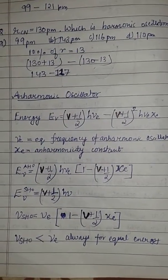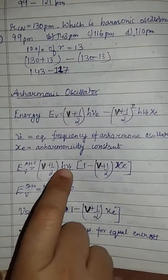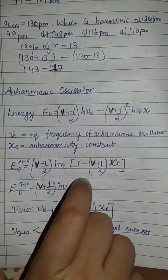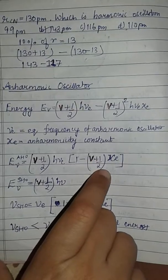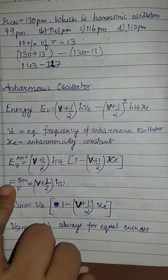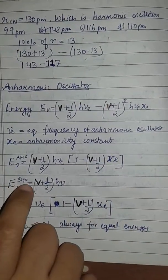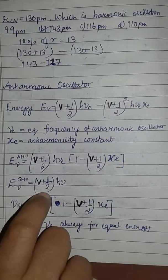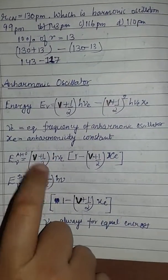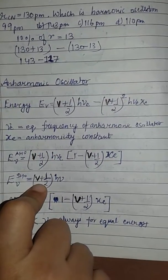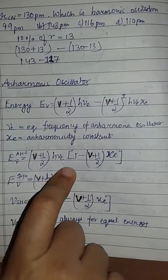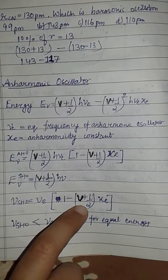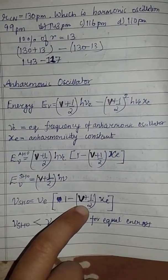Energy equals (V + 1/2)hν_e, taking (V + 1/2)hν_e as a common factor, we get in brackets: 1 minus (V + 1/2)X_e. We know the energy of simple harmonic oscillation is (V + 1/2)hν. Comparing both equations, ν equals ν_e [1 minus (V + 1/2)X_e].